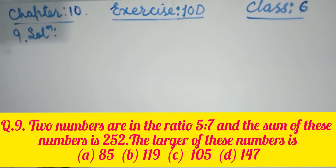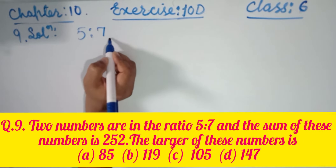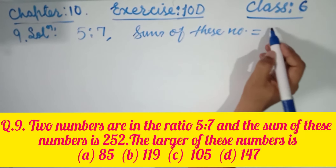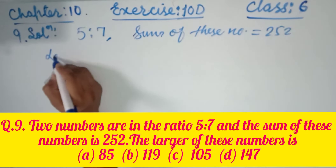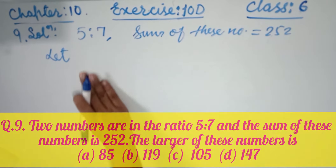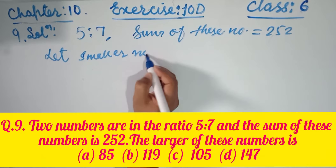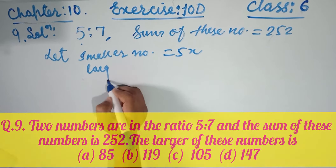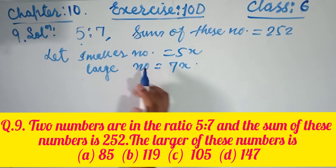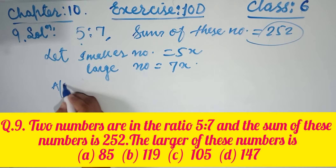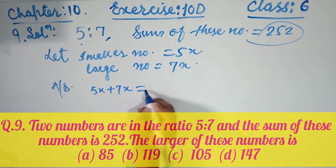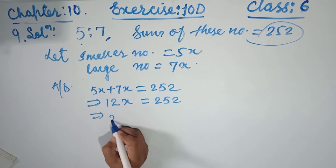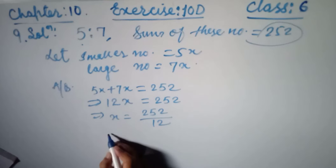Question number nine says: two numbers are in the ratio 5 to 7 and their sum is 252. Let the smaller number be 5x and the larger number be 7x. According to the question, 5x plus 7x equals 252, so 12x equals 252.